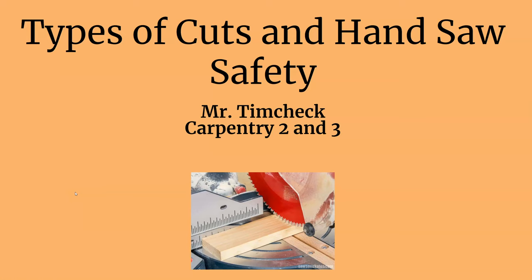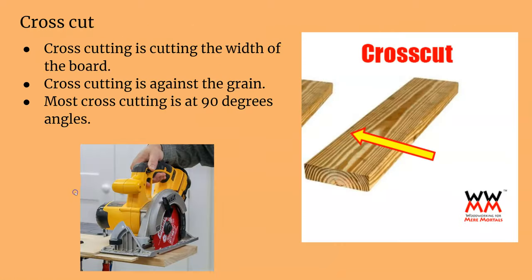This lesson is on the types of cuts and hand saw safety. Cross cutting is cutting across the grain of a board. You can see how the grain goes down the length of the board and a cross cut goes across it. That's why it's called a cross cut.